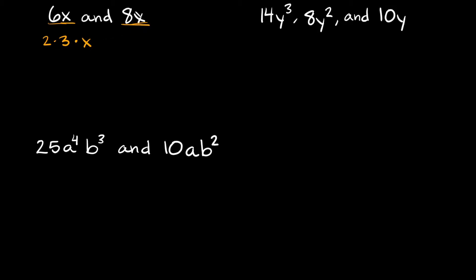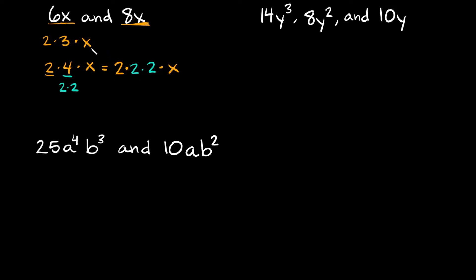Now let's go to 8x. What two numbers can we multiply together to get 8? We could multiply 2 times 4, and we're still multiplying by x. Now 2 is prime, but 4 is not — we can keep breaking it down. So 4 breaks down into 2 times 2. That means 8x becomes 2 times 2 times 2 times x.